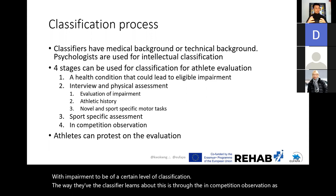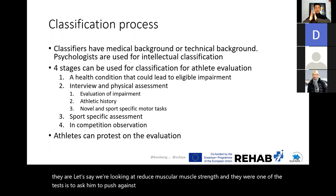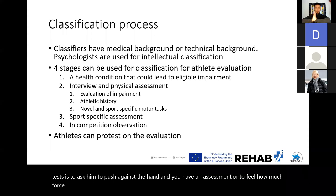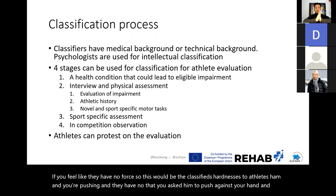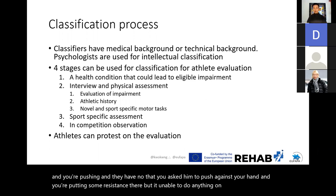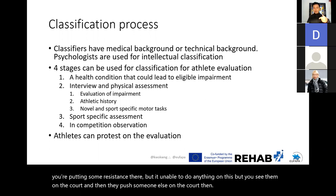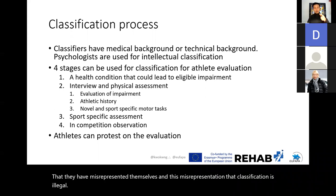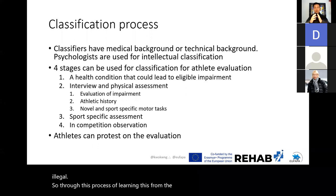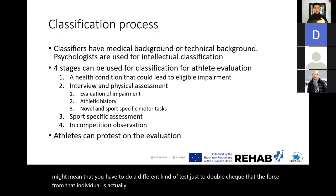The classifier learns through in-competition observation. For example, if assessing reduced muscle strength, a test may ask the athlete to push against your hand while you provide resistance — if they cannot produce any force but then you see them push someone on the court, that is misrepresentation, which is illegal. Through this process of learning from in-competition observation, you may need to use a different kind of test to double-check that the force from that individual is true rather than a misrepresentational test.